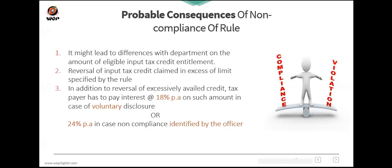Next question: does the rule say to claim the lower of 120% of 2A or books balance? Yes — you calculate 120% on your GSTR 2A, then compare with your books balance. Whichever is lower, you consider that value. If your books balance is lower, you take that. If 120% of your GSTR 2A is lower, you take that. You must compare both values and take the lower one.